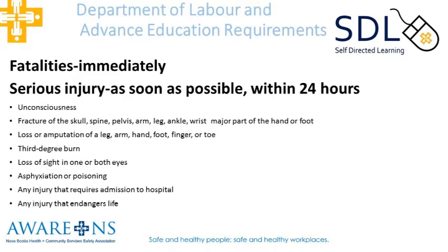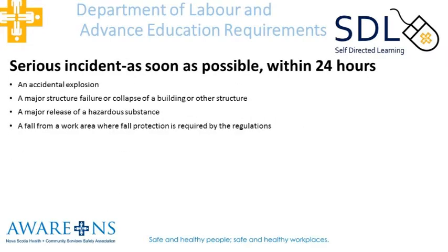A second category of serious incident — also reportable as soon as possible within 24 hours — includes: an accidental explosion; a major structural failure or collapse of a building or other structure; a major release of a hazardous substance; or a fall from a work area where fall protection is required by regulations. Those are the definitions as laid out by the Department of Labor.